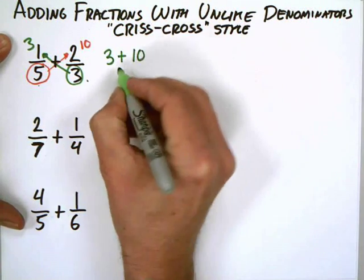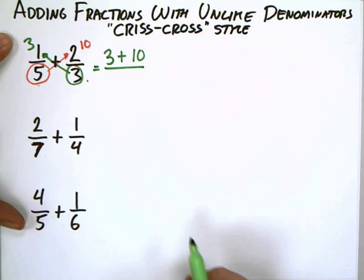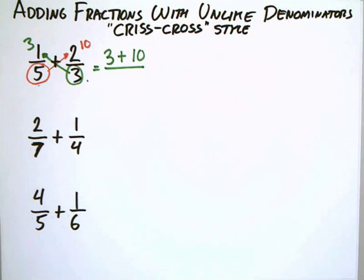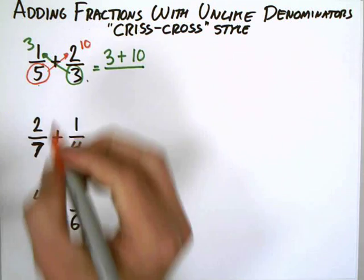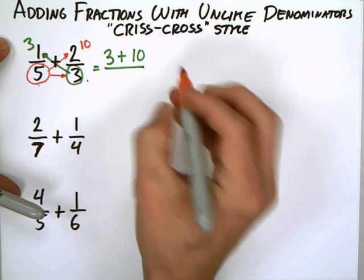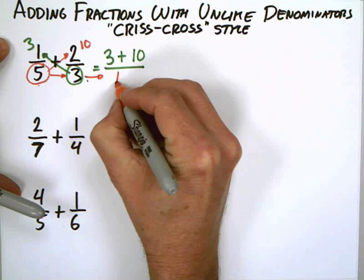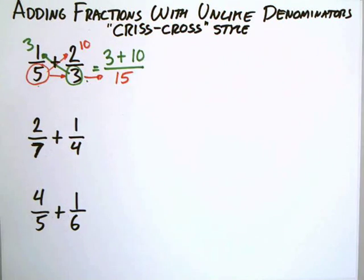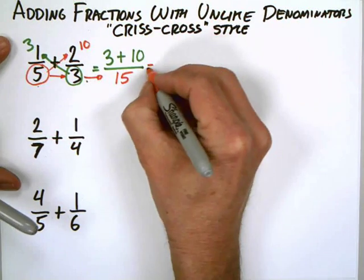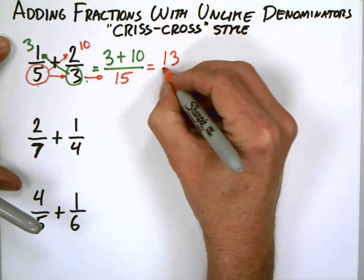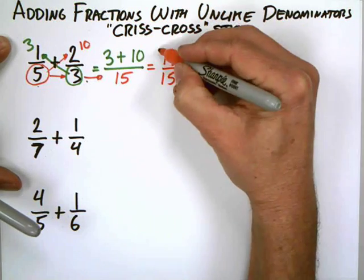That's going to be my new numerator, and my bottom is just going to be the product of these two denominators. So for my denominator down here, I'm just going to do 5 times 3, which is going to get me 15. So the answer to these two fractions added together is 13 fifteenths.